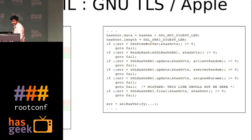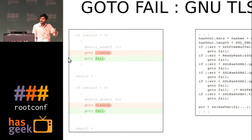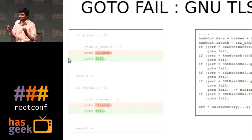What happens is: this condition is checked. If true, go to fail. If not true, go to fail. Otherwise, go to fail. So the last condition is never checked at all. And these certificates, even if they were not valid, were accepted as valid certificates. This was an Apple bug — a proprietary source code — and someone found a flaw in it. Then GNU TLS looked at its own code and corrected it also. Innocent mistakes — which goto statement to use.